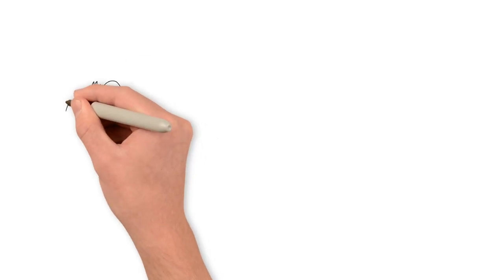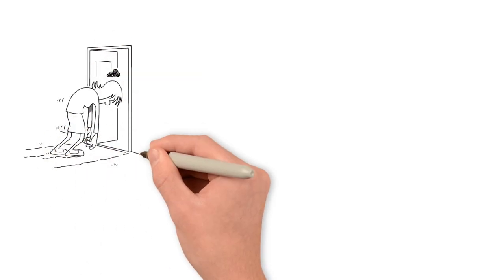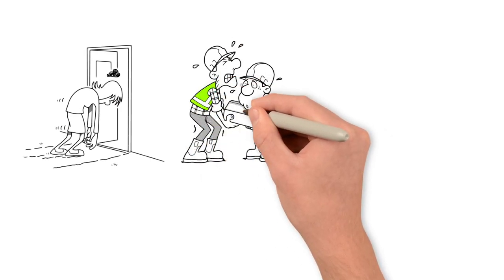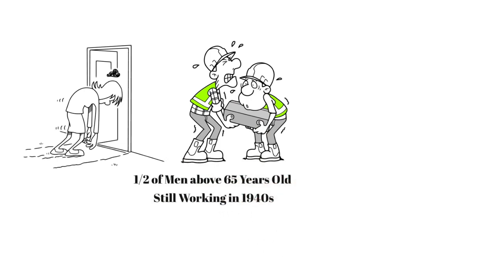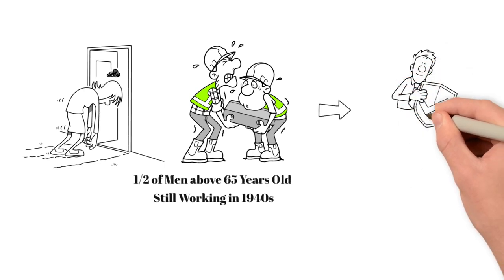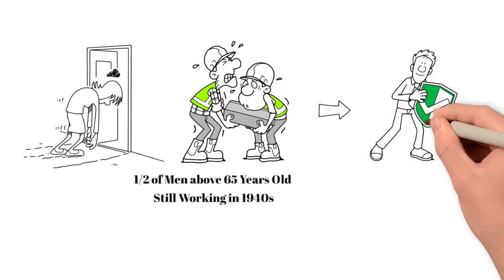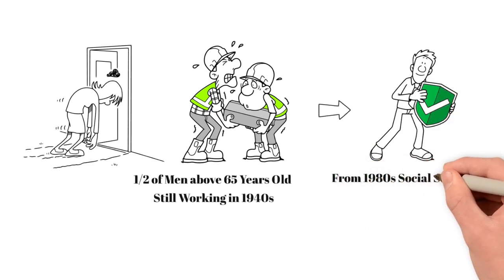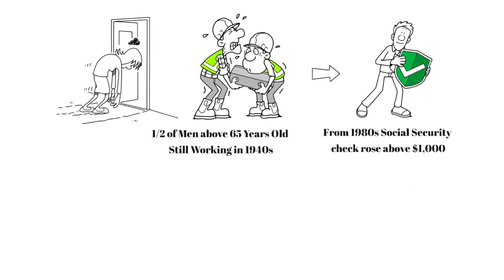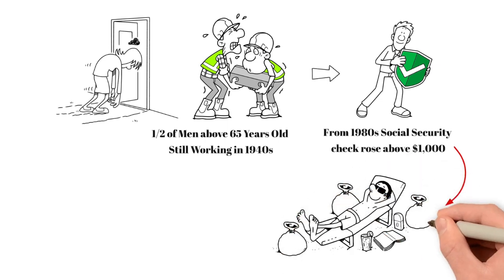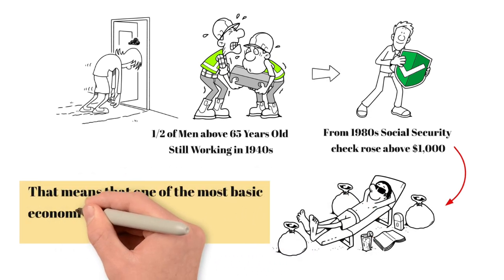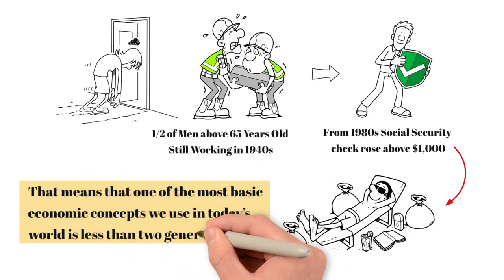Before the Second World War, most Americans worked until they died. Life expectancy was lower back then, of course. And even then, half of all men above the age of 65 still participated in the labor market in the 1940s. Things started changing with the introduction of Social Security after World War II, but retirement remained an unattainable ideal for most American workers until the 1980s, the decade in which the average monthly Social Security check rose above $1,000, adjusted for inflation. Before that, only a privileged minority could afford to quit work in their mid-60s.